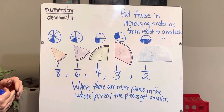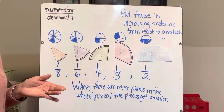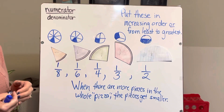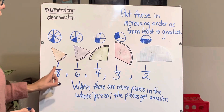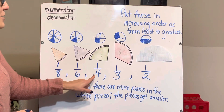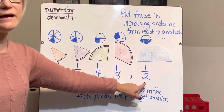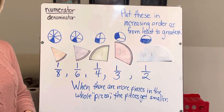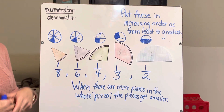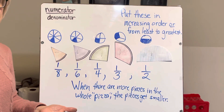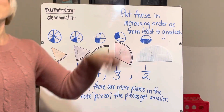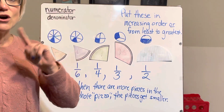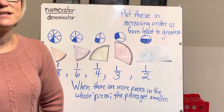We've determined that the larger the denominator, the smaller the pieces. So we don't want a pizza with 100 pieces because you'd only get a tiny sliver — we'd rather have fourths or halves to get more pizza. Keep watching, keep thinking, always stay curious, and I'll see you next time.